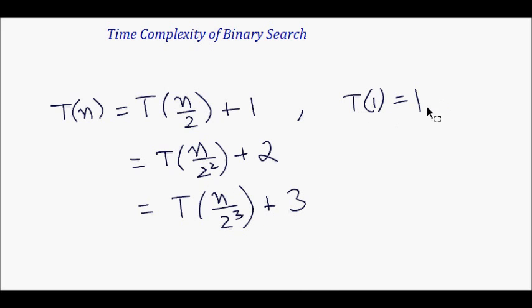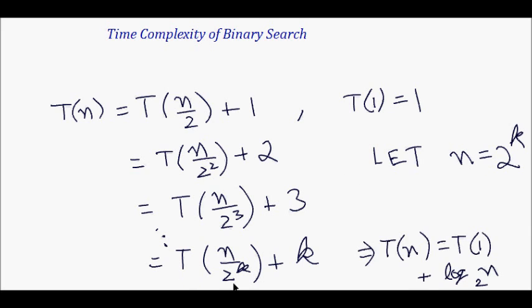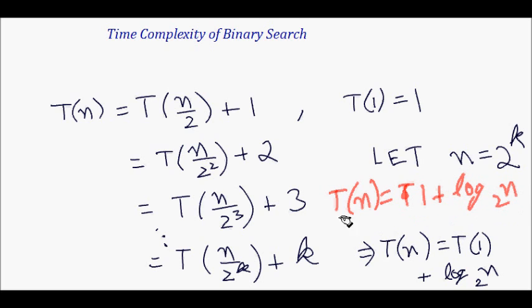If the size of the tree is 1, I just need one comparison. The general form becomes T(n/2^k) + k. Let n be a power of 2, then n/2^k = 1, so T(n) = T(1) + k. Since k = log n base 2, T(n) = T(1) + log n base 2, which equals 1 + log n base 2, giving O(log n). This makes for a very fast search using a binary search tree.